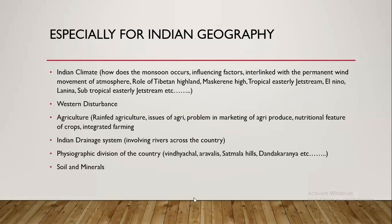Specifically for Indian geography, Indian climate must be studied in detail. There are various questions on monsoon — why it occurs, why there is a monsoon break every year, why sometimes there is a flurry of monsoon and sometimes a drought-like situation in the same period from June to August. You need to understand the influencing factors, how Indian monsoon is interlinked with permanent wind movement, and the role of physical features like the Tibetan Highland, Mascarene High, tropical easterly jet stream, El Niño, La Niña, and subtropical jet streams.